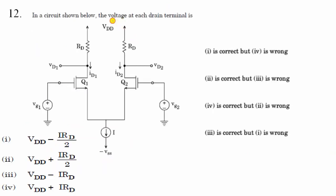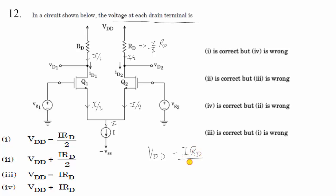Twelfth question: in the circuit shown, the voltage at the drain terminal. Assuming MOSFETs Q1 and Q2 are similar with equal resistors RD1 and RD2, the net current i splits as i/2 through each MOSFET. Since gate current is 0 in MOSFETs, source current equals drain current. The drop across each resistor is (i/2)·RD, so VD1 = VD2 = VDD − i·RD/2. Statement 1 is correct, statement 4 is wrong.